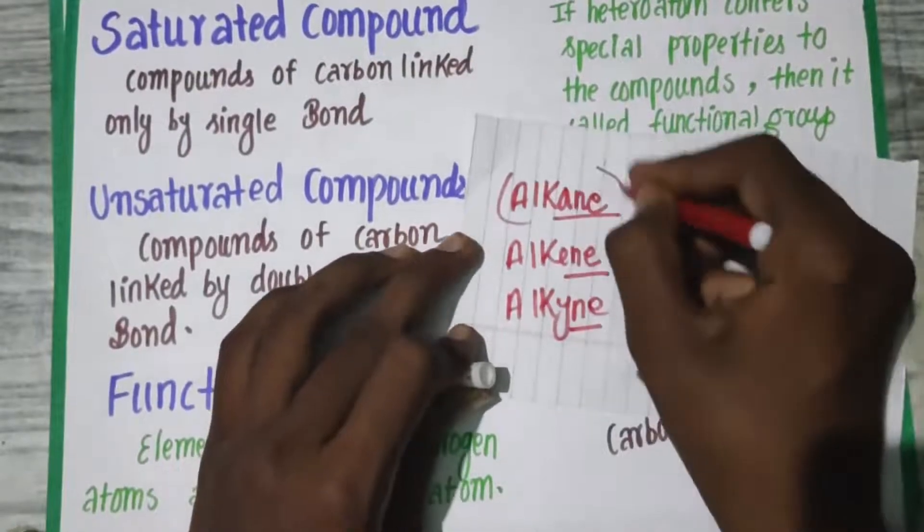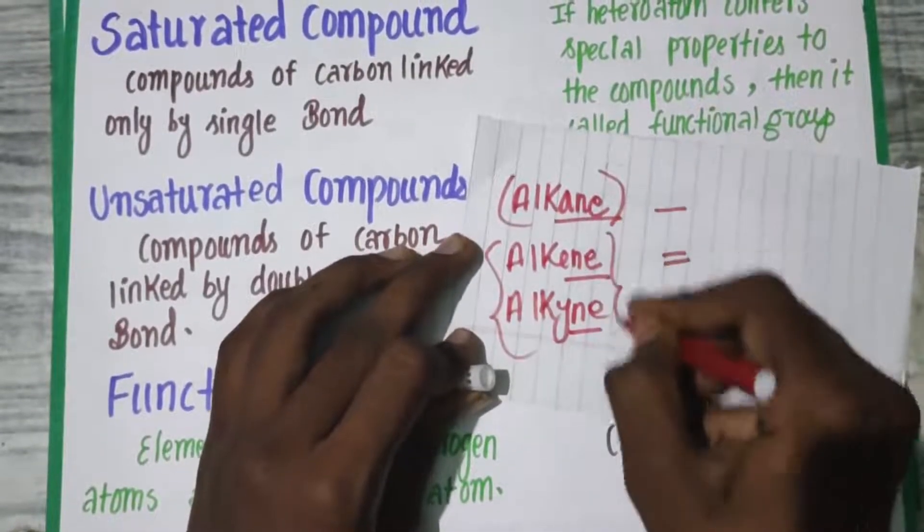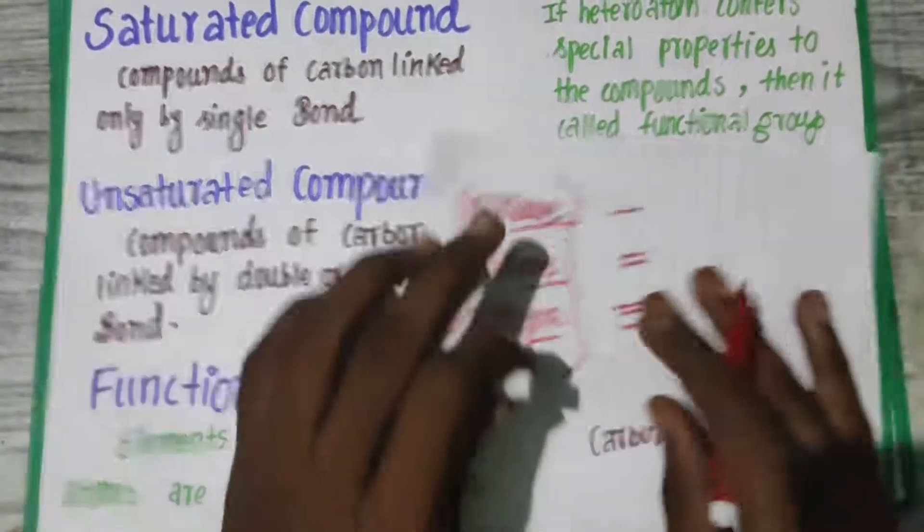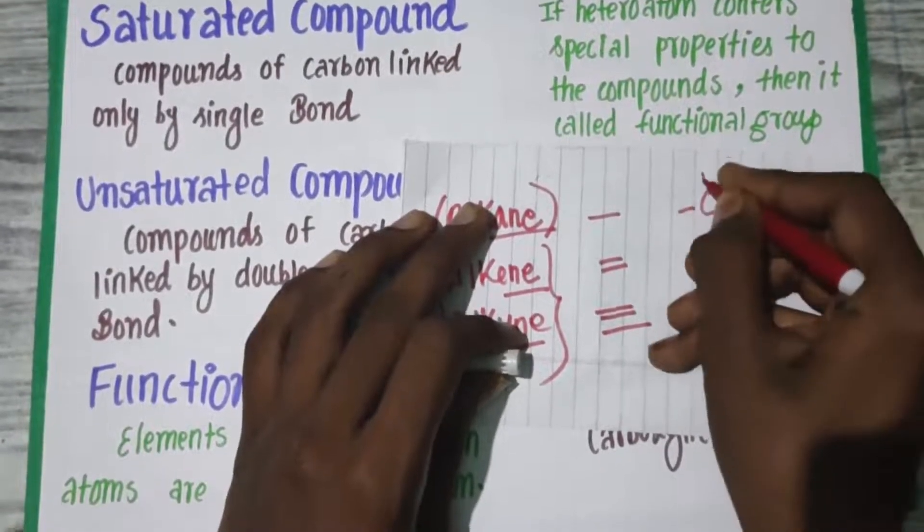So alkanes are for saturated compounds. Saturated compounds are linked only by single bonds—carbon linked only by single bonds.